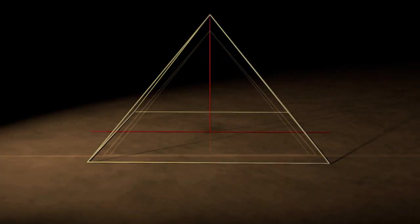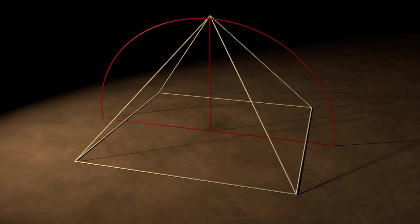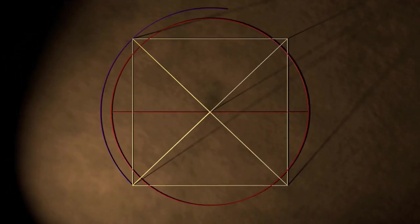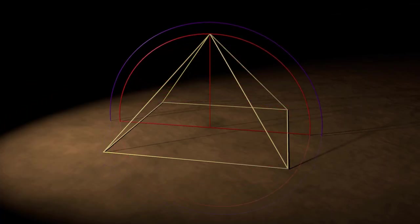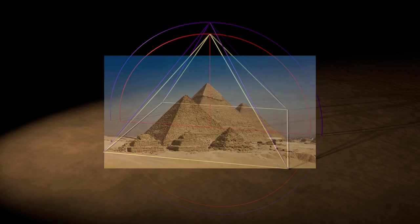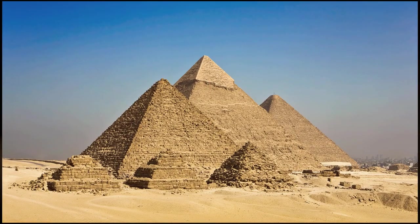But although it might be quite simple to construct a shape based on these principles in a small scale, it is an amazing achievement to encode these values precisely into a huge structure like the Giza pyramid.